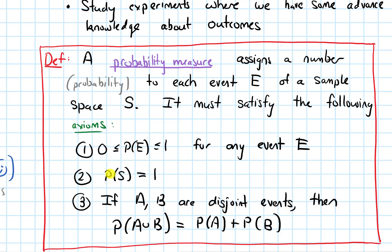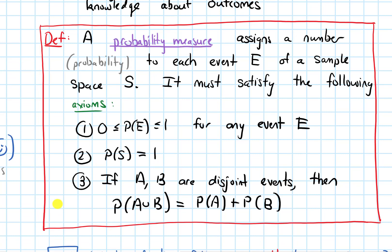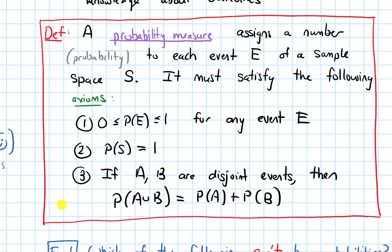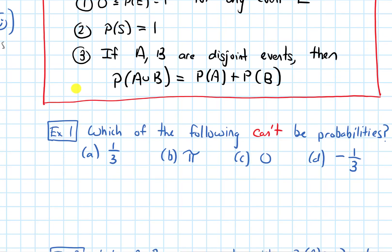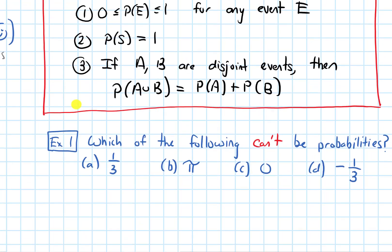That's really similar to what we've seen before when counting the number of elements in disjoint sets. These are all properties we'd expect a probability measure to have. Now that we've stated these, let's do some short examples. Example one asks: which of the following cannot be probabilities?